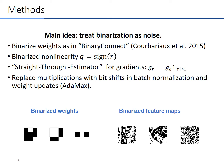We binarize the weights as done in Binary Connect and replace the non-linearity function with a binarized non-linearity. Since we use back propagation, we need to differentiate through the binarization function. To do so, we use the straight-through estimator, which simply passes the gradients as they are while taking into account saturation effects. The remaining multiplications used for batch normalization layers and weight optimization were replaced with bit shift operations.